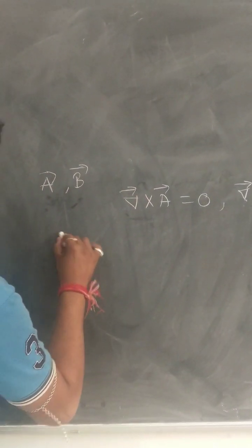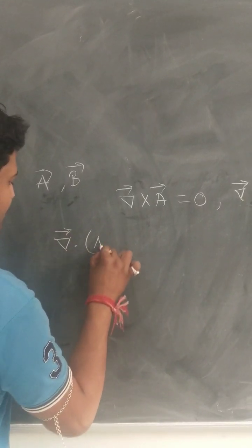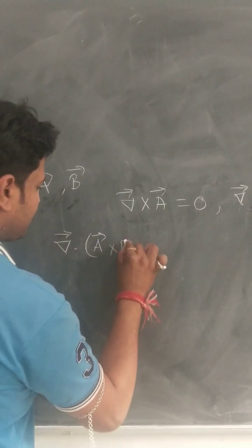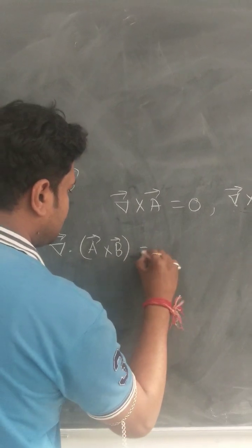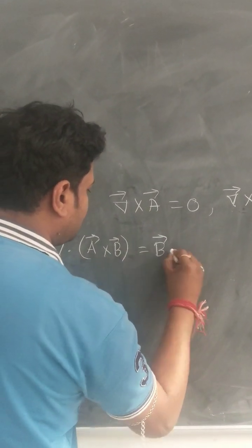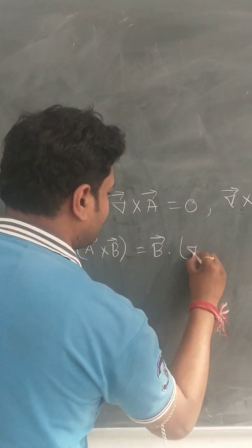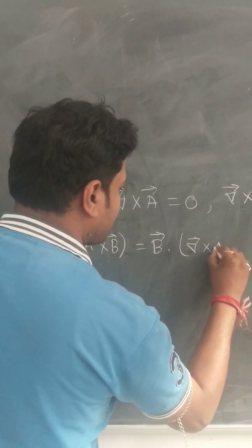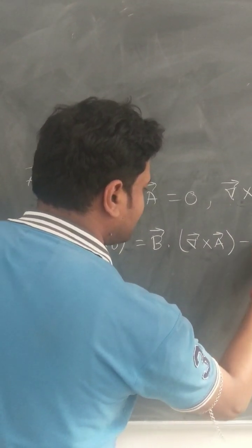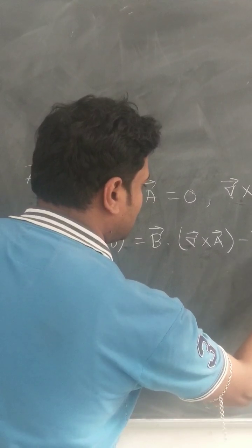Now, we know that divergence of A vector cross B vector equals to B vector dot curl of A vector minus A vector dot curl of B vector.